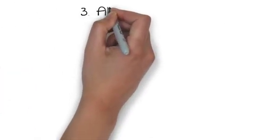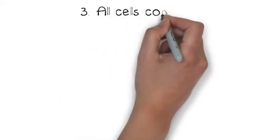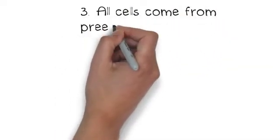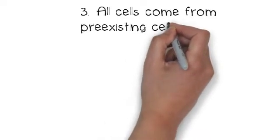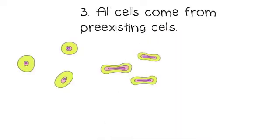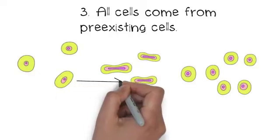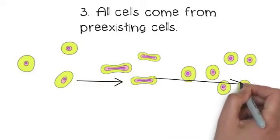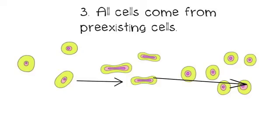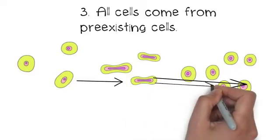Number three. All cells come from pre-existing cells, meaning only cells can make cells. And here we can see cellular division happening, where it grows, starts to divide, and then where you once had one cell, you get two cells.